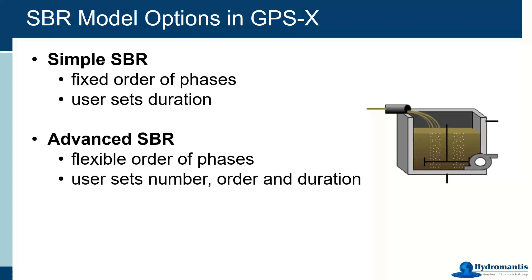The advanced SBR is basically the same thing except you have a much more flexible order of phases. You can set the number of phases in your cycle, the order in which things happen, and the duration. With the simple SBR you're in a fixed order: fill, aerate and mix, settle, decant, waste. With the advanced SBR you can put phases in whatever order you like — for example, an anoxic period followed by an aerated period, then another anoxic and another aerated period.